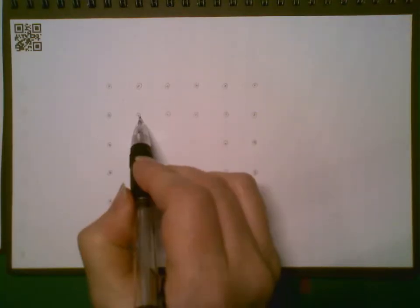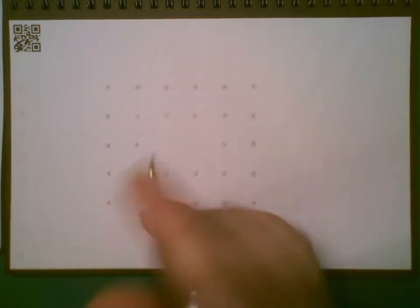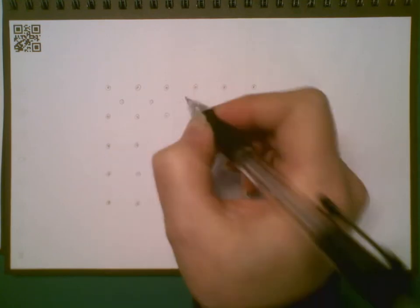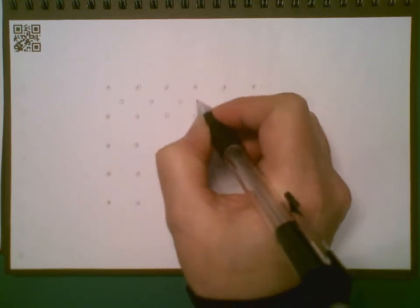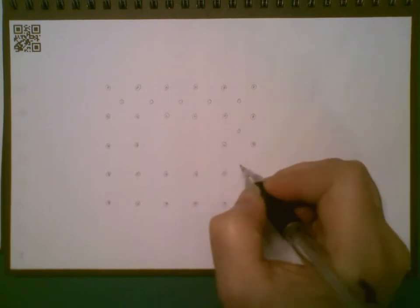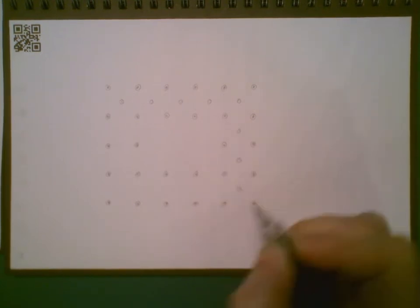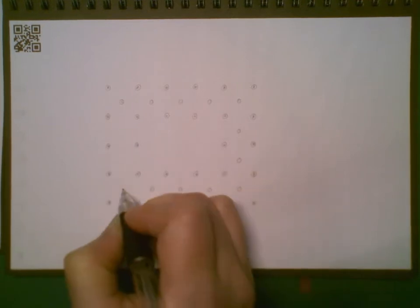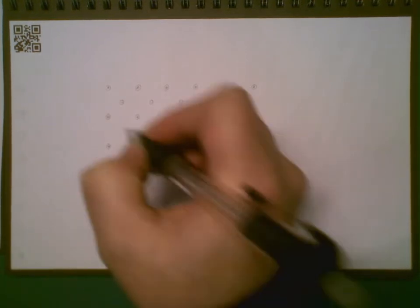Now inside each square of dots I'm going to add a center point. So it makes groups of five. You can see that taking shape here. Right in the center.